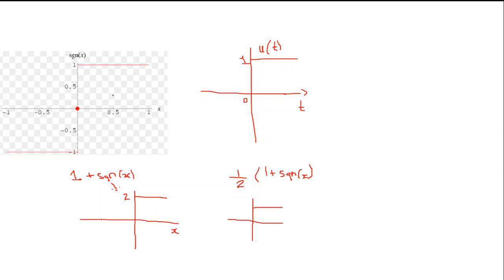Zero divided by two is zero, and two divided by two is one, so the resulting graph is zero for negative values and one for positive values. This is our step signal u of x. Therefore, u of t equals one-half times one plus signum of t.